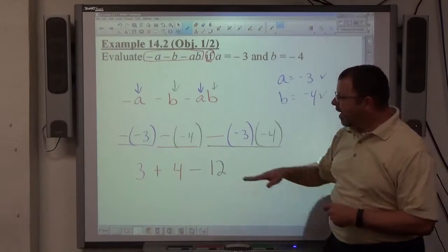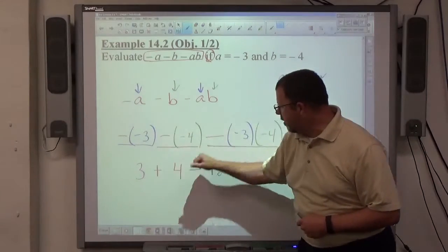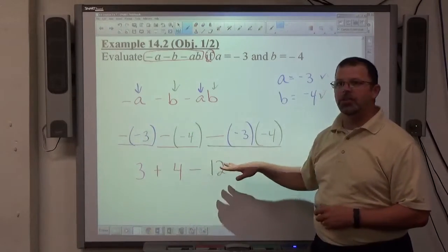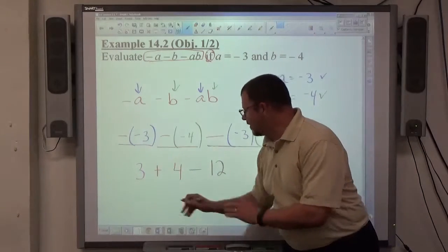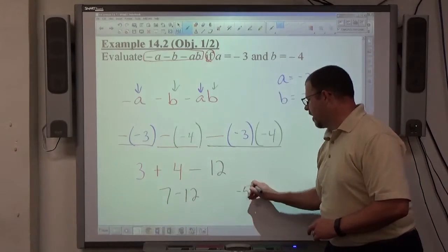Once I get the value of each object, positive 3, positive 4, negative 12, now it's just addition and subtraction. 3 plus 4 is 7. 7 minus 12 equals negative 5.